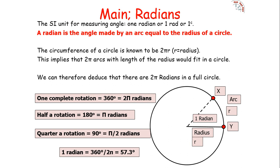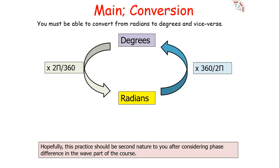Linking the two quantities: 1 radian equals 360 divided by 2π, because there are 360° and 2π radians in a full circle, so 1 radian equals 57.3°. To convert from degrees to radians, multiply by 2π over 360. To convert from radians to degrees, multiply by 360 over 2π.